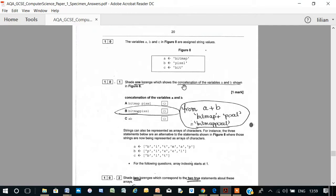Concatenation means the joining together of strings. So, it's a plus operator concatenation. A plus B is bitmap plus pixel, bitmap pixel, which is bitmappixel.